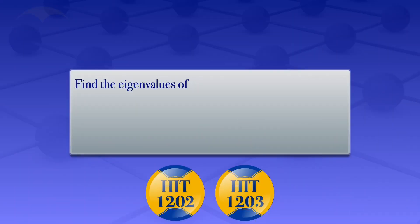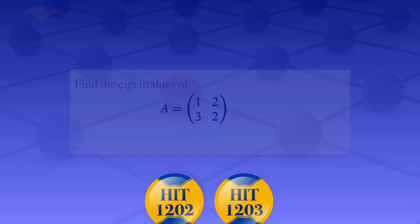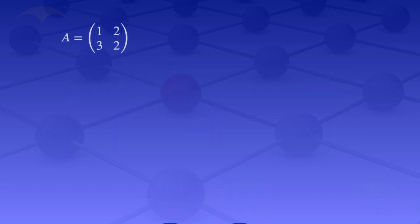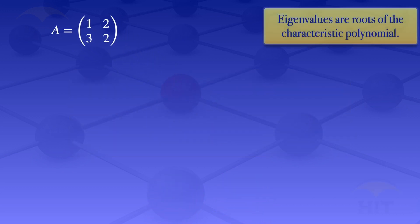In this tutorial, I am going to find the eigenvalues of the matrix A, which has elements 1, 2, 3, 2. By definition, the eigenvalues are the roots of the characteristic polynomial. So in this case, we first have to find the characteristic polynomial in order to find the eigenvalues of that given matrix.